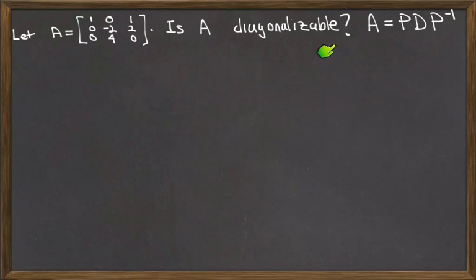I want to know if it's diagonalizable, and what that means is, is there a diagonal matrix D and an invertible matrix P such that A can be written as P times D times P inverse? In other words, is A similar to a diagonal matrix?